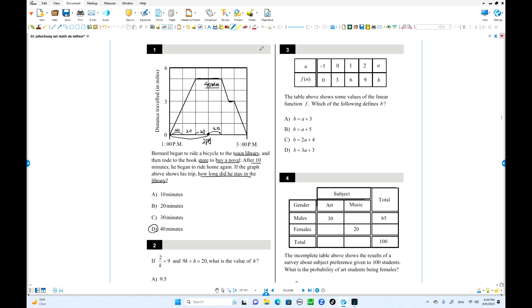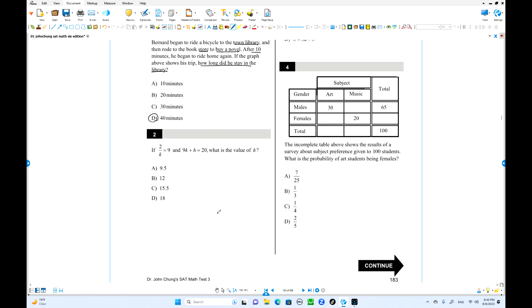Let's try number 2. 2 over K is 9. 2K plus H is 20. What is the value of H? You got to find the value of 2K. 9 times K is 2, right? 9K is 2. So put this number 2 there. 2 plus H equals 20. A value of H is 18. The choice D is the answer.